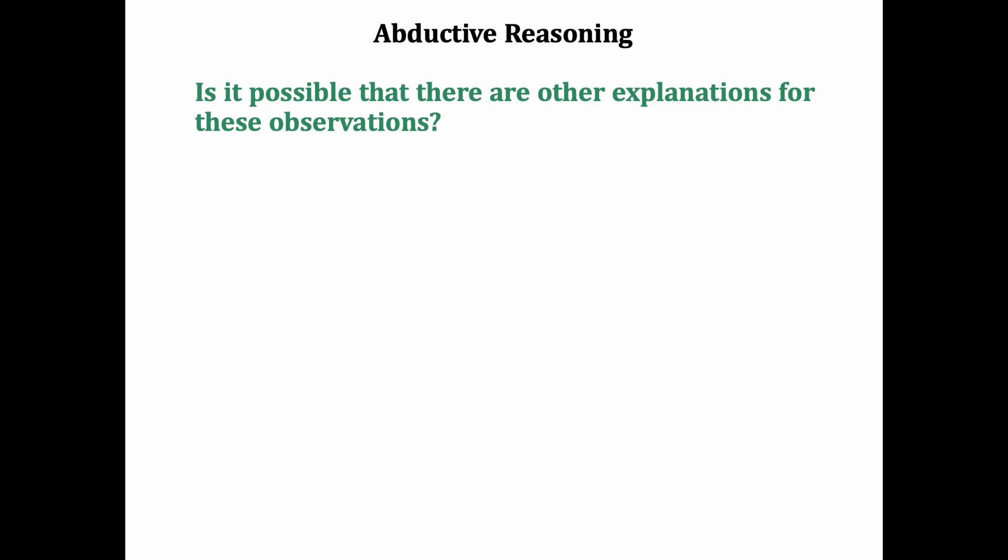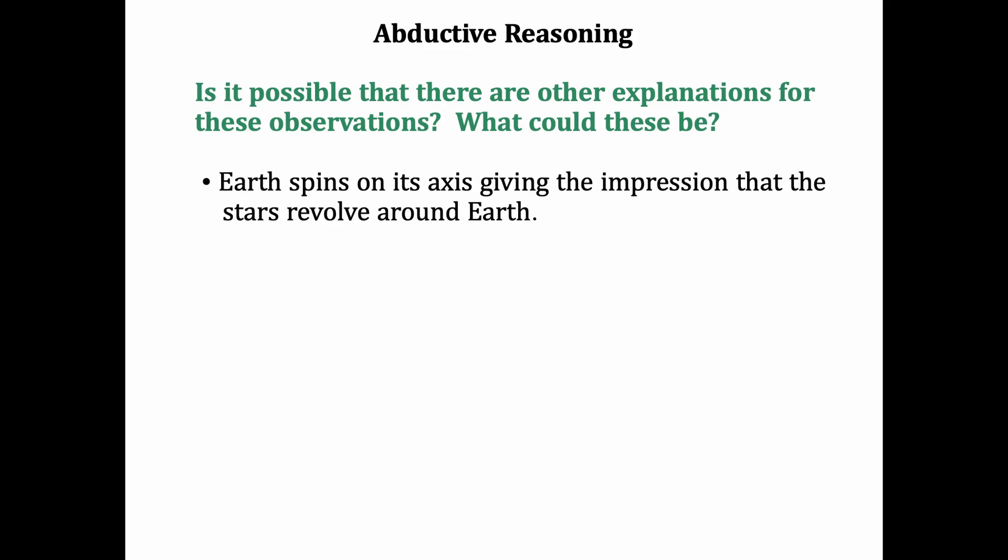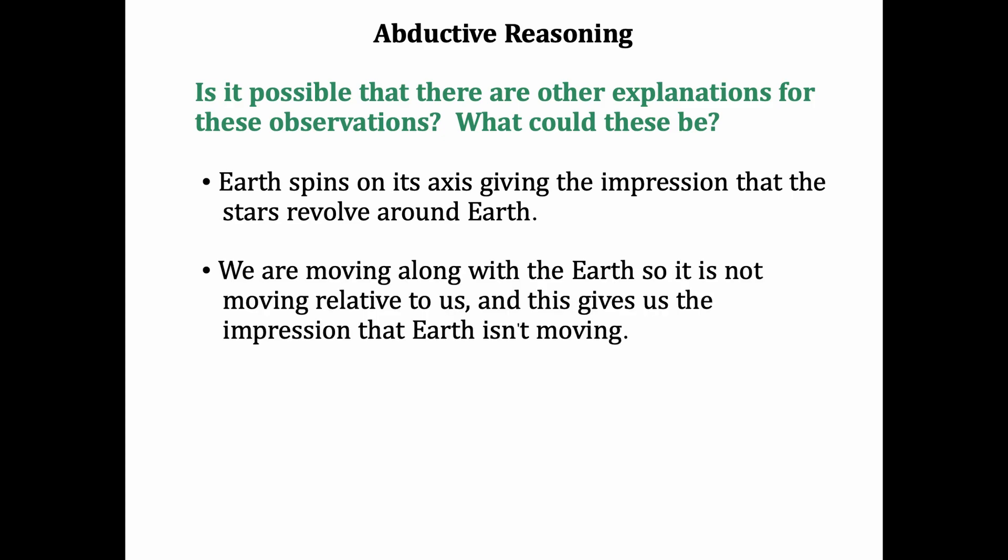Is it possible there are other explanations for the observations? What could these be? Well, we know now that Earth spins on its axis, giving us the impression that stars revolve around Earth. We're also moving along with Earth, so it's not moving relative to us. And this gives us the impression that Earth is stationary, but it's actually moving over 60,000 miles an hour around the sun.